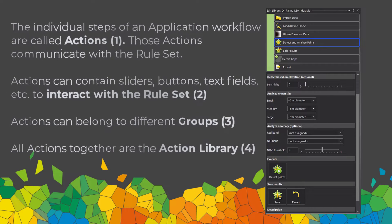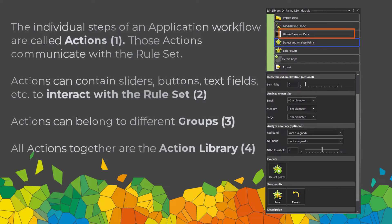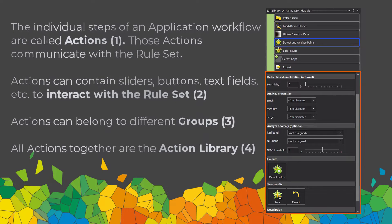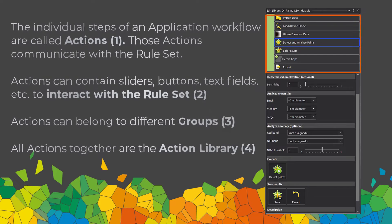A user is guided through a workflow which is defined, or which they can alter, and can tweak settings of the rule set running in the background. The user doesn't see the complex rule set — they only see a graphical user interface. An application is based on so-called actions, and can have multiple actions. Those actions communicate with the rule set and can contain sliders, buttons, and text fields — any sort of widget. For example, you can define an NDVI value by a slider, then hit execute.